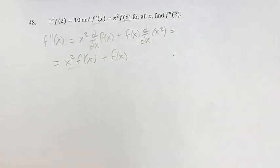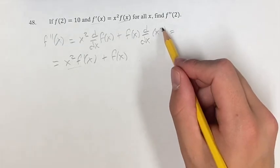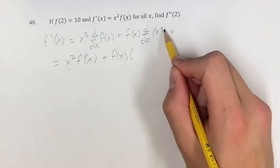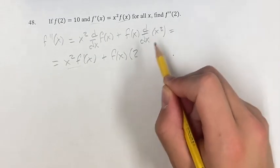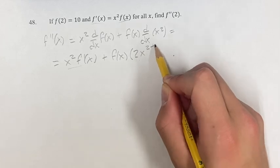The derivative of x² we know is, since this is a power function, you take the exponent and bring it down, and then your new exponent is 2 minus 1.